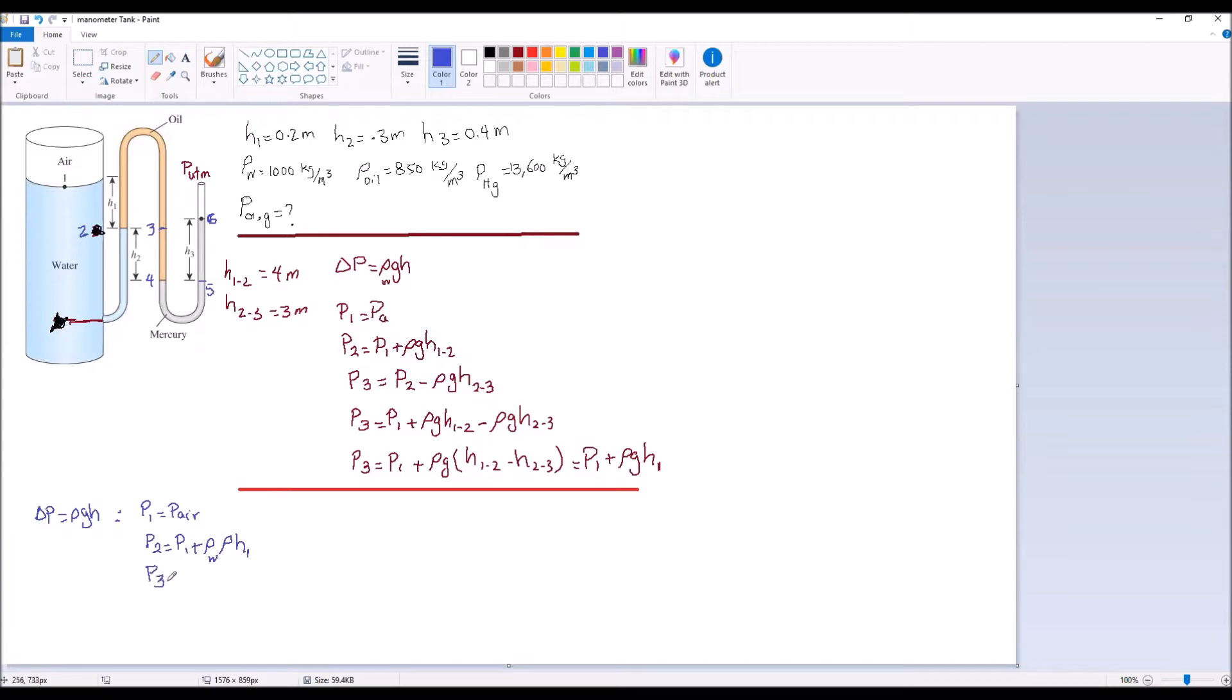Then we go to point 3. P3 is on the other side at the same level. So P3 must be equal to P2, same level.